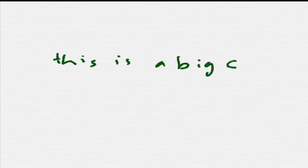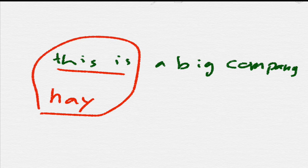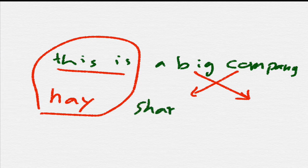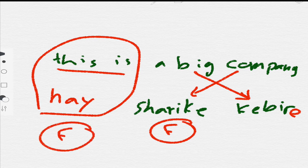If you wish to say 'this is a big company,' 'this is' in Arabic is 'hadhihi' — used for feminine. Then you follow it with 'sharika kabira.' Notice: feminine noun uses the feminine demonstrative 'hadhihi,' and the adjective must also be feminine.